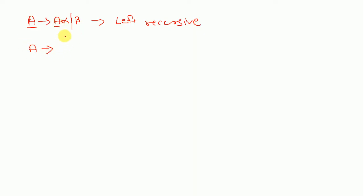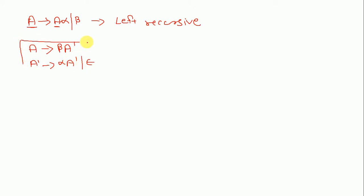In order to remove left recursion, we need to follow this rule: A gives β A-dash, and A-dash gives α A-dash slash epsilon.